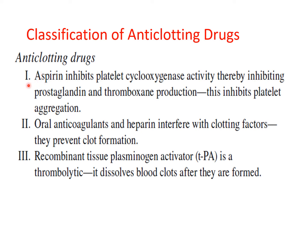The first type of anti-clotting drugs includes aspirin. These drugs inhibit the production of thromboxane A2 because they inhibit the activity of the enzyme cyclooxygenase that produces thromboxane A2 in the body. This drug inhibits platelet aggregation.